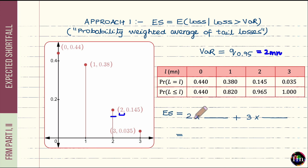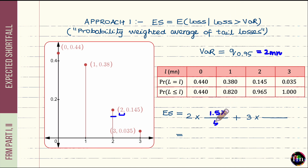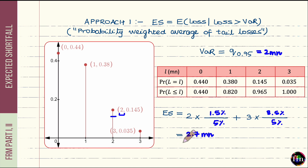The ES is calculated as a probability-weighted average of 2 million and 3 million. The conditional probability of realizing 2 million given we are in the right tail is 1.5% divided by 5% (the level of significance). For 3 million it is 3.5% divided by 5%. So ES = 2 million × (1.5%/5%) + 3 million × (3.5%/5%) = 2.7 million, which is greater than our VaR of 2 million.